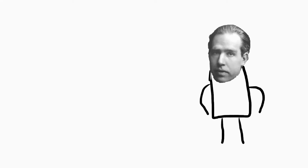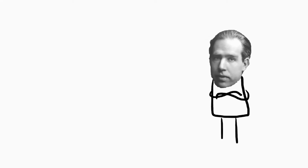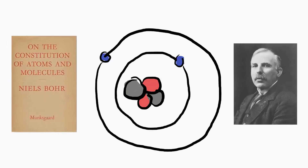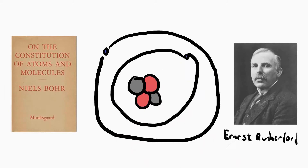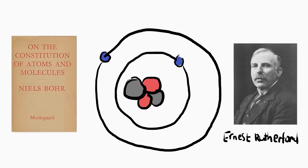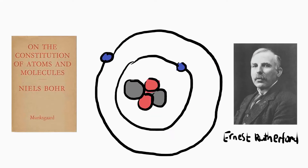First off, let's get some background on who Niels Bohr is. Niels Heinrich David Bohr was a Danish physicist born in 1885. People were mainly first introduced to Niels Bohr through his initial model of the atom. In 1913, Niels Bohr published a series of three papers called On the Constitution of Atoms and Molecules.